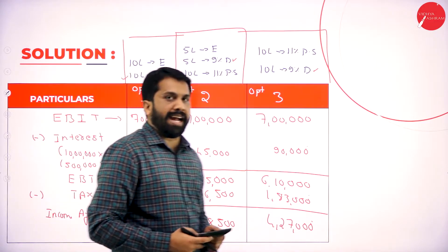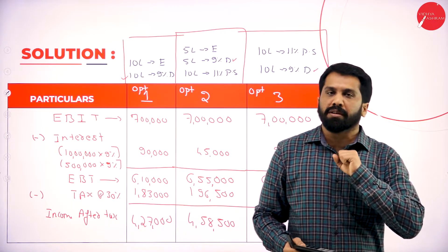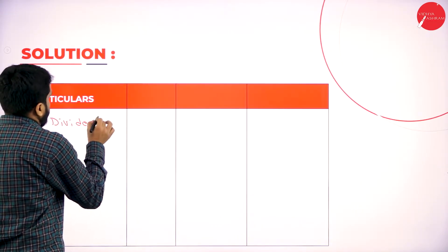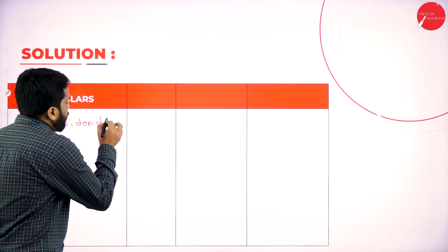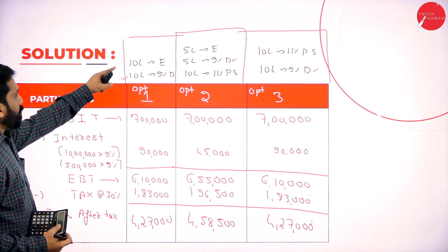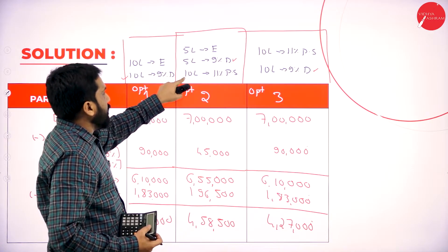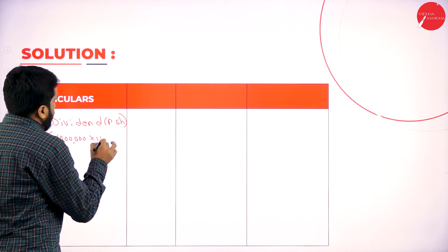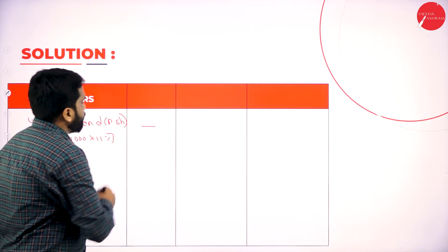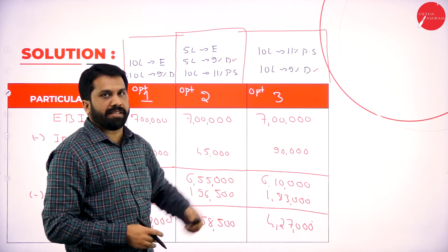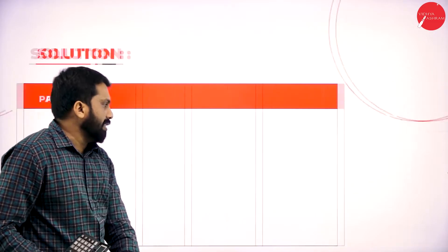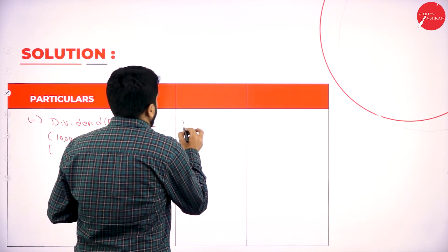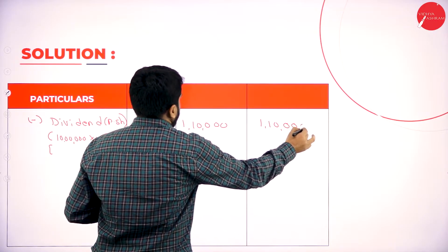This is income after tax, i.e., income available to preference as well as equity shareholders. Once done, less dividend. Dividend should be calculated on preferences. Do we have preferences in Option 1? No. For Option 2: 10 lakh into 11%. For Option 3: 10 lakh into 11%. As per this: 10 lakh into 11% — I got 1 lakh 10,000.